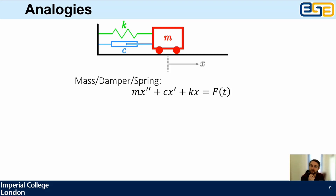If I drag this trolley to the right and let it go, you should all have a feeling that it gets dragged back to the left by the spring, while the damper slows the rate at which it returns. Depending on the balance of the three parameters, this determines whether the system oscillates forever, gradually slows down, gently moves back to the middle, or slowly creeps back as if moving through honey.